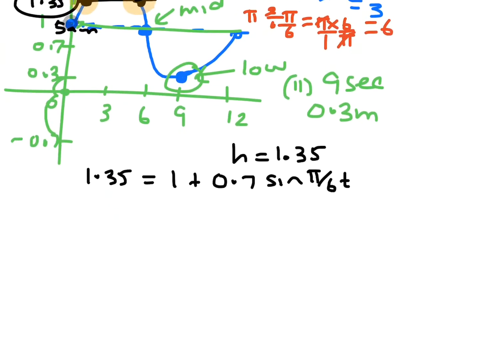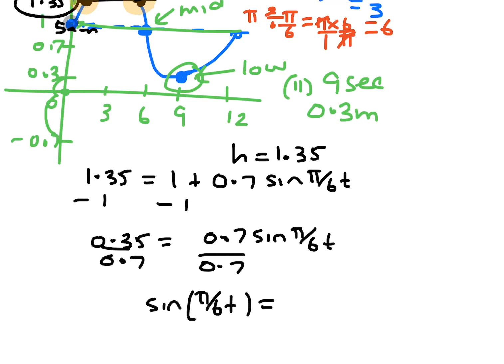So let's just solve this equation. So in order to solve it, you need to take 1 away. So you get 0.35 equals 0.7 sin π on 6t. Then you divide by 0.7 and sin π on 6t equals 0.35 divided by 0.7. That's actually a half.